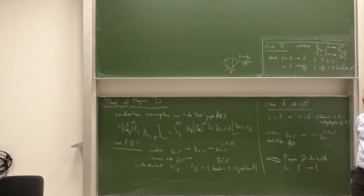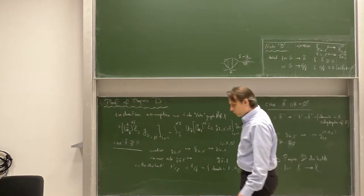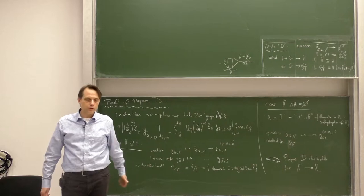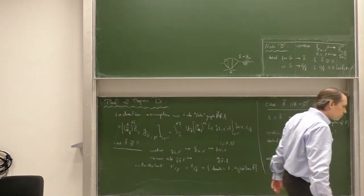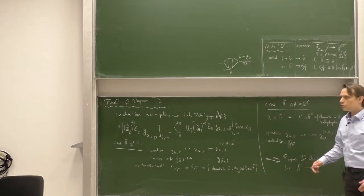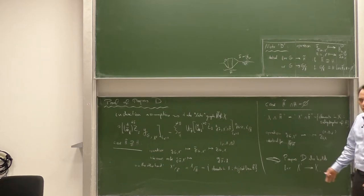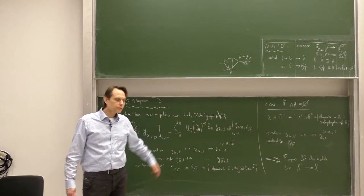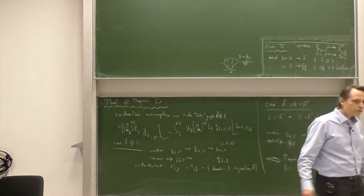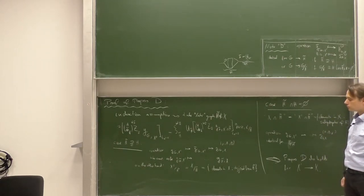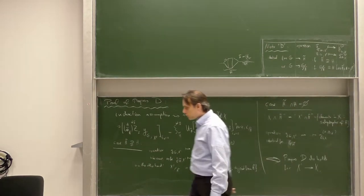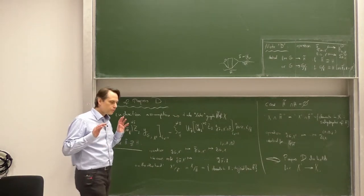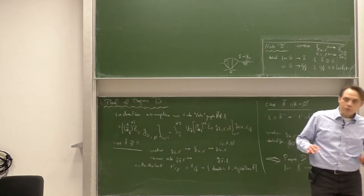This is a specific renormalization scheme for fixing the finite parts of the counterterms, and that scheme is implemented in dimensional regularization. However, that does not mean that the final physics result is specific to the chosen regularization. You can switch to any other renormalization scheme by adding finite counterterms, and you can do that from any starting point. Also, if you use a different regularization, you can add finite counterterms to get to MS bar and vice versa, to get to any other renormalization scheme consistent to fix the finite parts of all the counterterms.